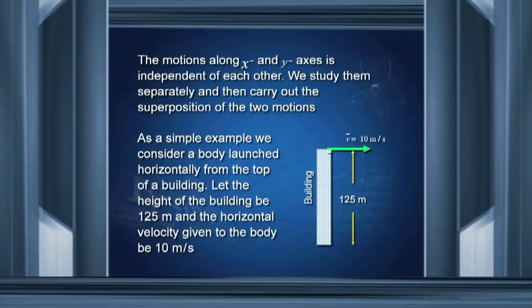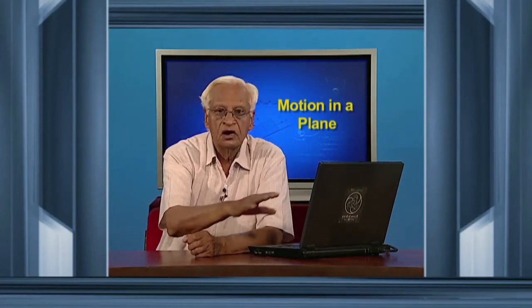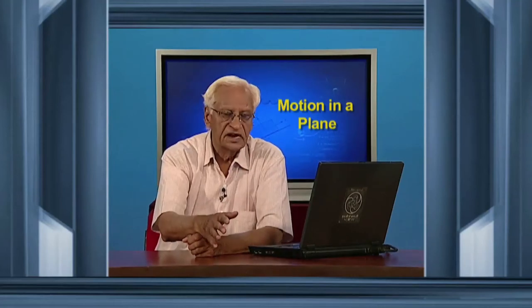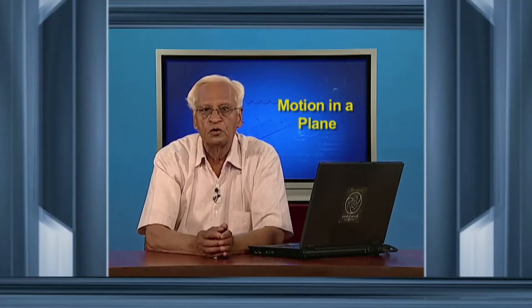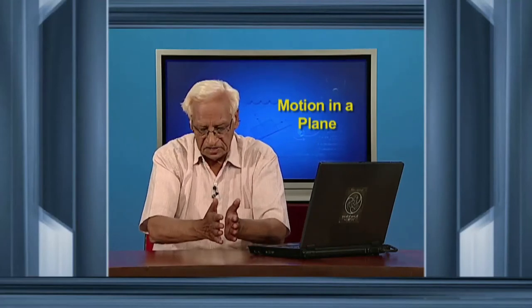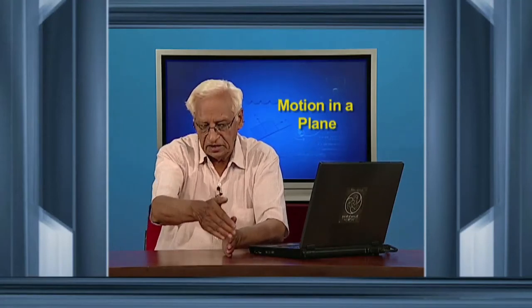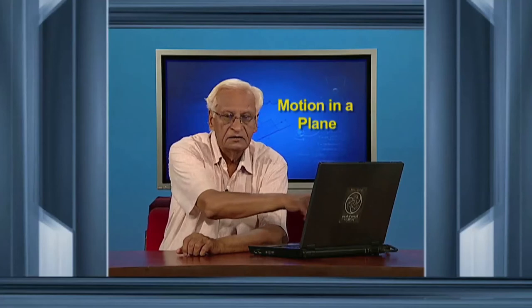As an example, we take a building which is 125 meters high. From the top of that building, we launch an object horizontally with a velocity of 10 meters per second. In the horizontal direction, there is no other force. Therefore, the object would move 10 meters in one second, 20 meters in two seconds, and so on. In the vertical direction, there is the force of gravity. The distance covered in the vertical direction is given by y equal to half g t squared. After each second, we note the position along the x-axis and y-axis from the top of the building, and assemble the data in a table.